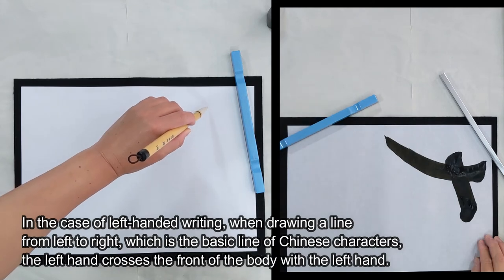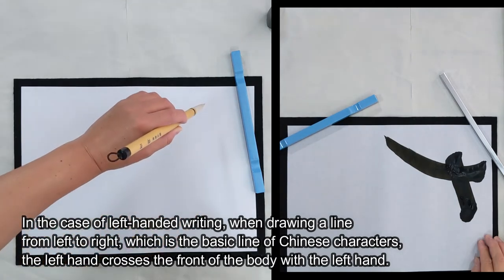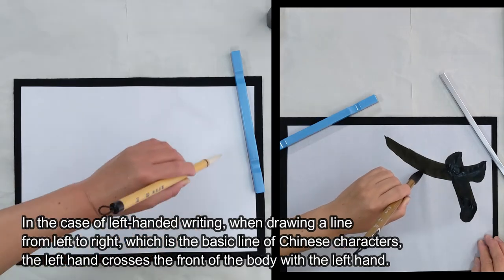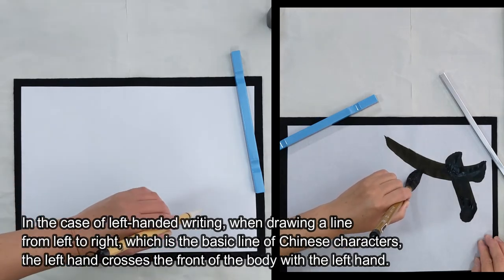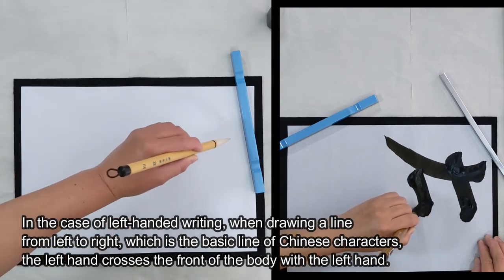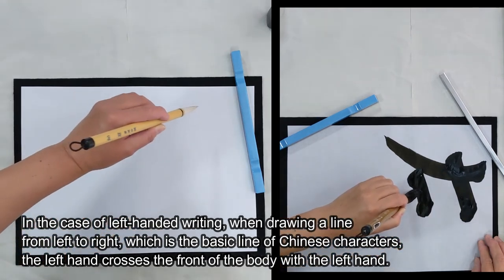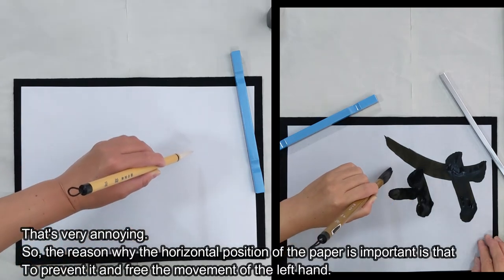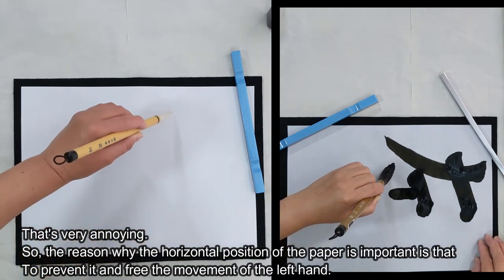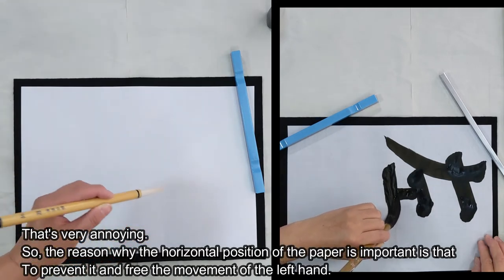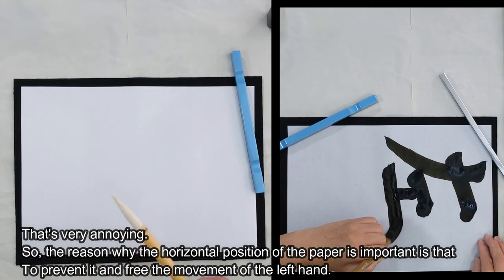In the case of left-handed writing, when drawing a line from left to right, which is the basic line of Chinese characters, the left hand crosses the front of the body. That's very annoying. The reason why the horizontal position of the paper is important is to prevent it and free the movement of the left hand.